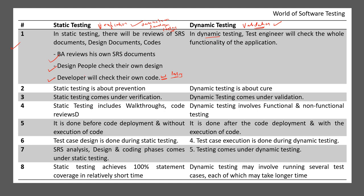The second difference: static testing is about prevention. In static testing we are reviewing the SRS documents, design documents, and code before it moves to dynamic testing - that is why it is termed as prevention. Dynamic testing is about QA - once the application or piece of application is developed, dynamic testing is done on it.